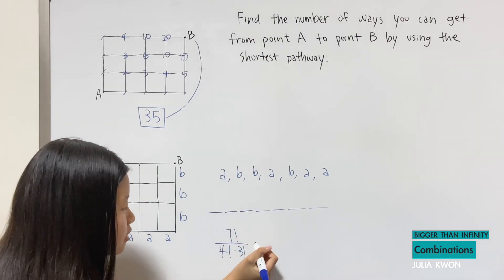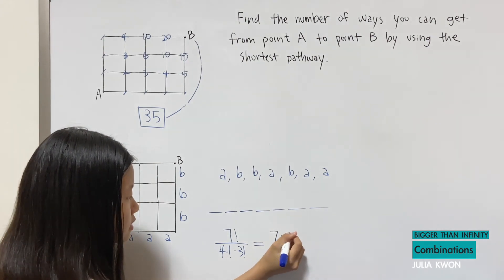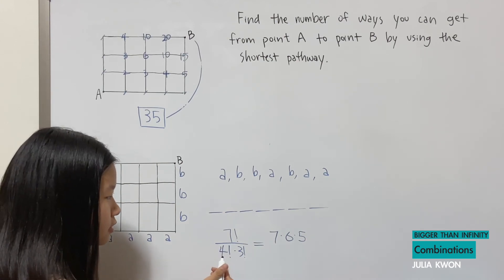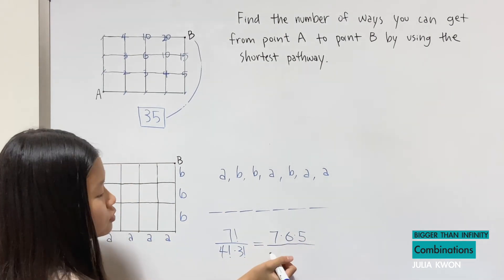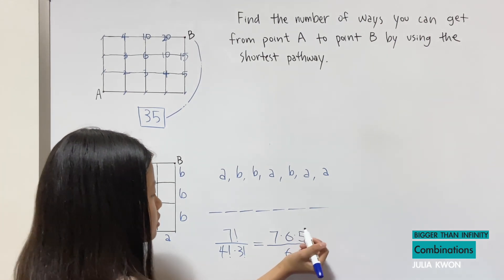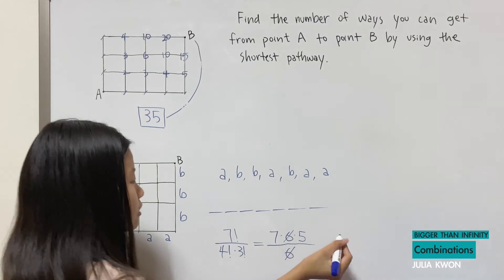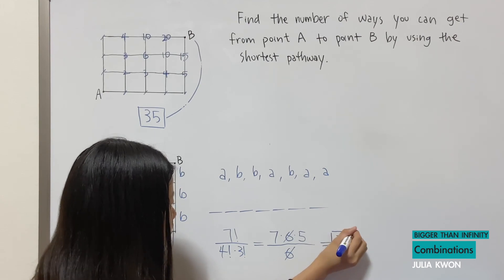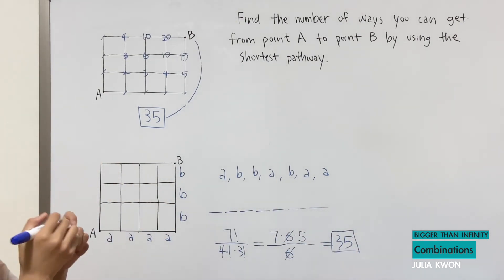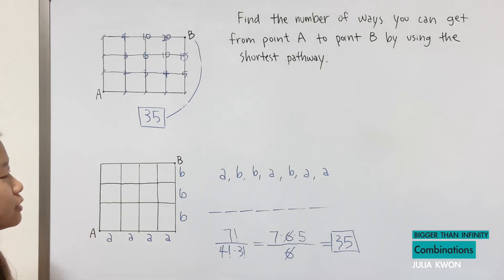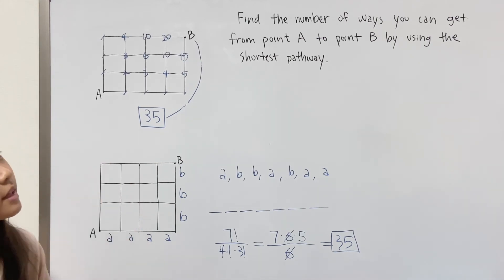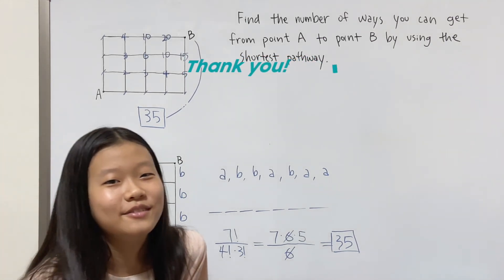If we simplify: seven times six times five times four factorial, we can cancel the four factorial in the denominator. Then divide by three factorial, which is six. The two sixes cancel, leaving thirty-five. So we got the same answer as before! This method only seemed long because I was explaining it — with practice, you can do it very quickly. That will be the end of this video. Thank you for watching. Bye.